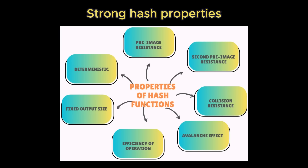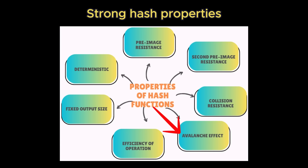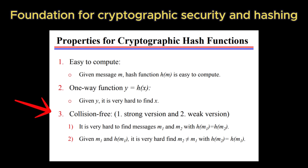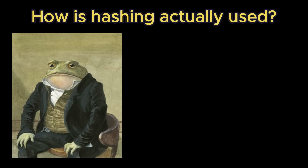Together, these properties — determinism, pre-image resistance, second pre-image resistance, collision resistance, and the avalanche effect — form the foundation for cryptographic security in hashing. But you might be wondering from a practical standpoint, how is hashing actually used?